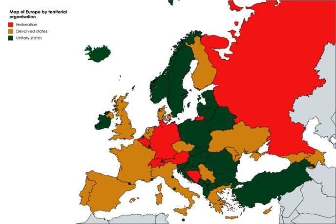The UAE is a federal absolute monarchy of the six ruling families of the United Arab Emirates, with the emir of each emirate being an absolute monarch and the emir of Abu Dhabi being also the president of the UAE.